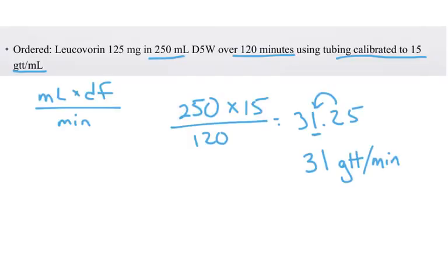Oh, real quick, going back to this. For this type of problem, if you were calculating other things, you may have needed the 125 milligram. But again, for these problems, you're only looking for the milliliter, the drop factor, and the minutes.